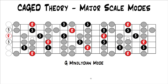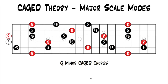Of course, the major scale doesn't help with minor triads. For the minor CAGED chords — which are all minor triads — those have to fit within minor scales. If you know your modes, you know there are three minor modes within the major scale: the Dorian mode, the Phrygian mode, and the Aeolian mode. So these minor chords will fit within each of those modes.